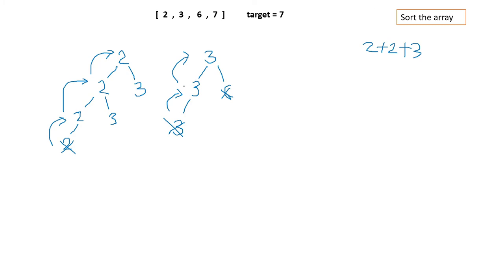You might wonder why we don't include 2 in the tree starting from 3. Because when we started with 2, we already had the option to choose 3, 6, 7 from that point. If we include 2 again under 3, we'd get repetitive results. So when starting from index of 3, we only choose from 3, 6, 7. Starting from 6, we only choose from 6, 7. 6+6 = 12, which exceeds the target.